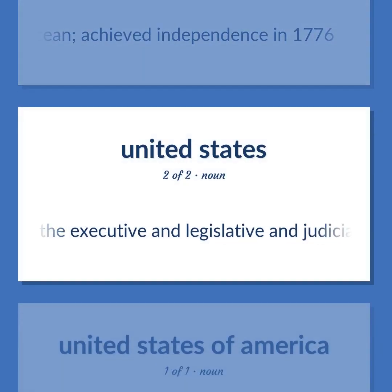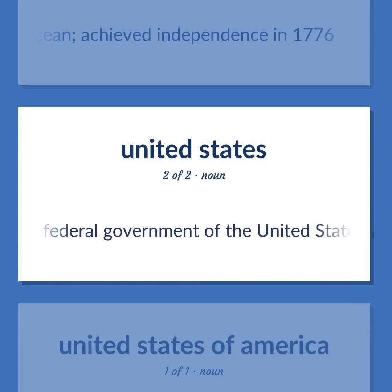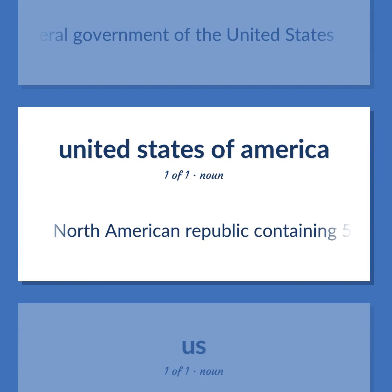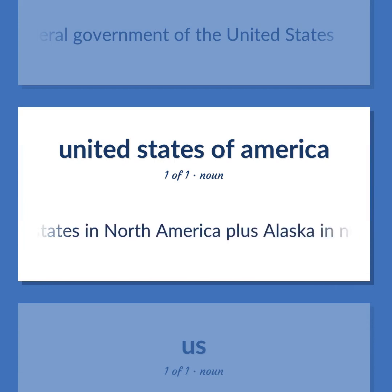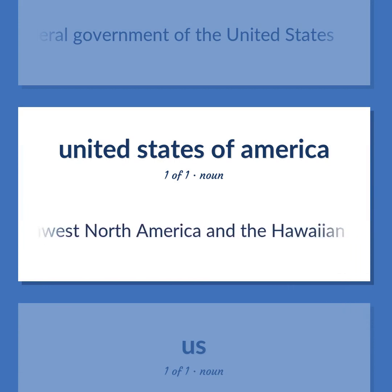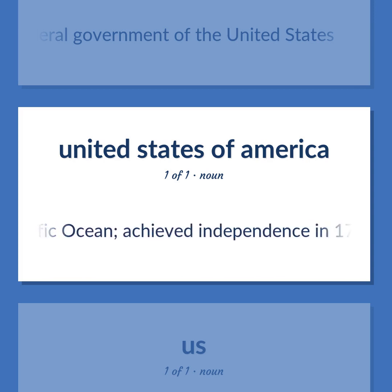The executive and legislative and judicial branches of the federal government of the United States. North American Republic containing 50 states — 48 contiguous states in North America plus Alaska in northwest North America and the Hawaiian Islands in the Pacific Ocean. Achieved independence in 1776.